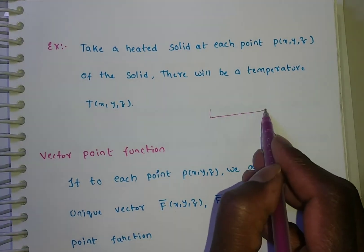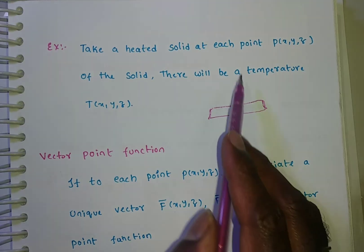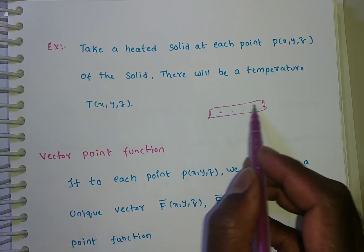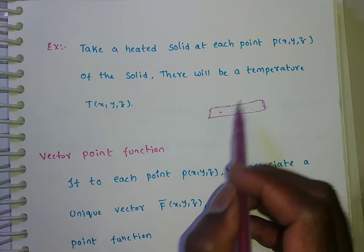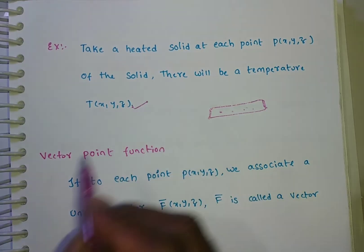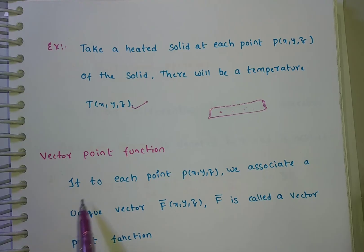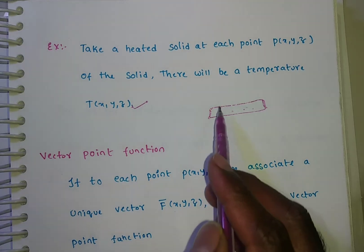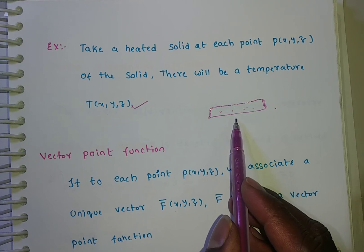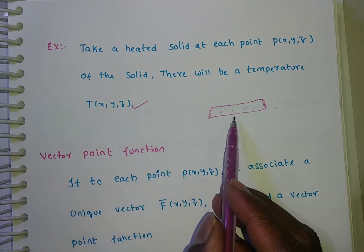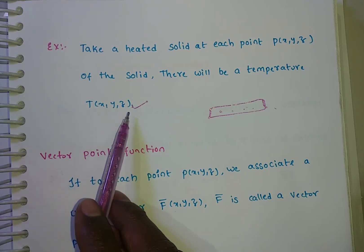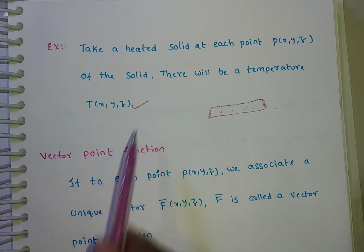A general example: take a heated solid. At each point of the solid, there will be a temperature. The temperature is denoted with phi of x, y, z, so this is called a scalar point function. At each point there will exist some temperature, and that temperature we are denoting with phi of x, y, z — this is an example of the scalar point function.